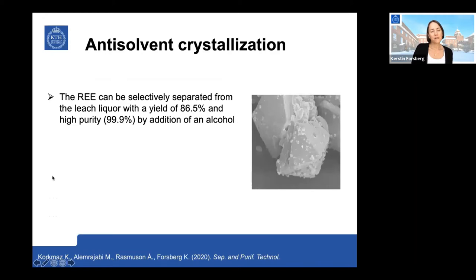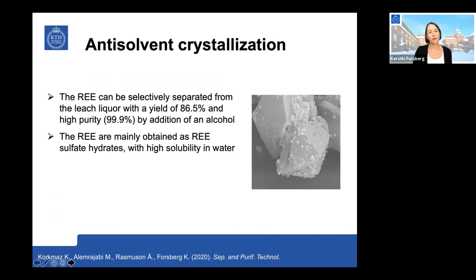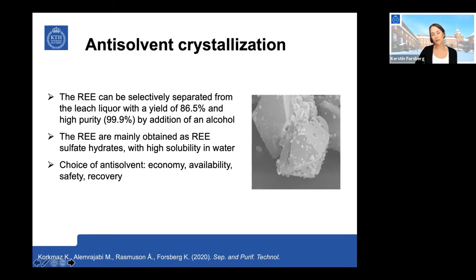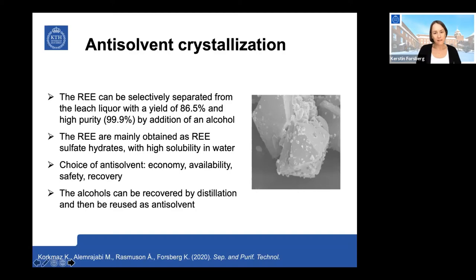To summarize: rare earth elements can be selectively separated from the leach liquor with quite high yield and high purity. If we want higher yield we can achieve it at the expense of purity. By adding an alcohol, the rare earth elements are mainly obtained as rare earth sulfate hydrates with high solubility in water — a very good property for further processing. Regarding the choice of anti-solvent, economy, availability, safety, and recovery are all important. After precipitation, the alcohol can be separated from the aqueous solution by distillation to recover both the acid and the alcohol for recirculation.